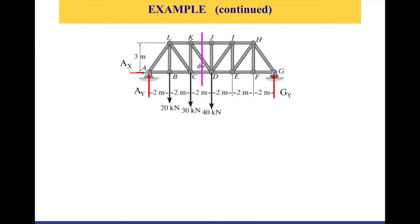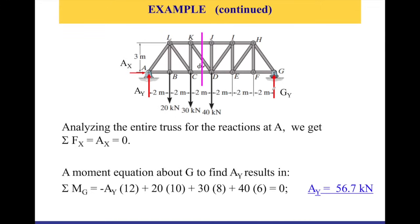First, we find the reactive forces. We assume AX, AY, and GY. If we say summation of forces in the x-axis equals zero, the only force in the x-direction is AX, so AX equals zero. This also answers why we select the left section — we want the part with the lowest number of unknowns. Once AX is zero, we have only AY and GY, so we can pick either side. We'll go with the left side.